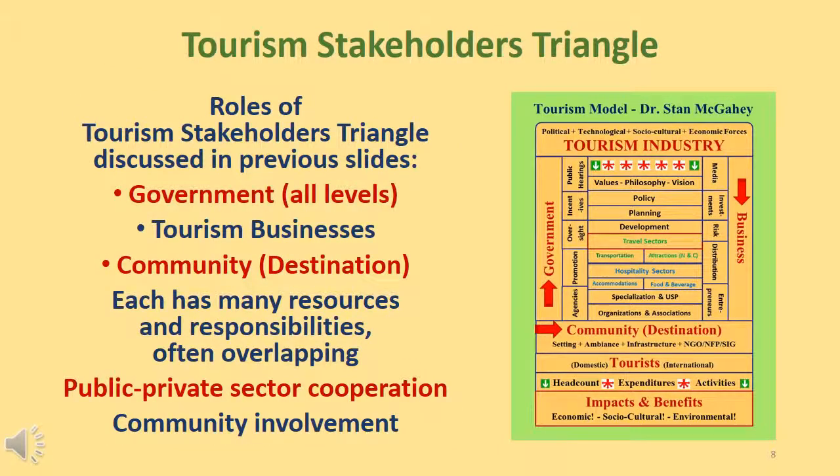As you may have noticed, we've been discussing some of the primary roles of the Tourism Stakeholders Triangle: the government, the tourism businesses, and the local community. Each of these stakeholders has many resources and many responsibilities. Often there is overlap among the three, so public-private sector cooperation and community involvement are absolutely critical to a destination's success. More about the Tourism Stakeholders Triangle in video number four.